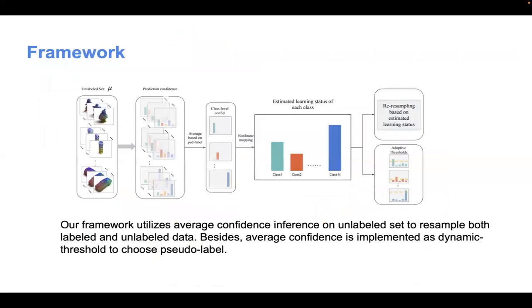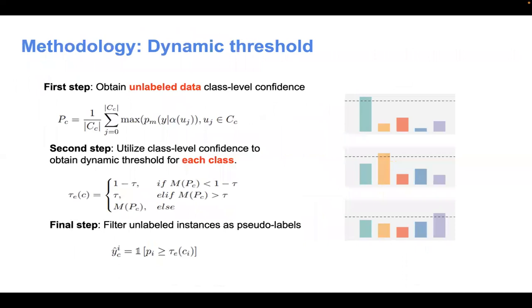This is the framework for our method. Our framework utilizes average confidence on unlabeled data to resample both labeled and unlabeled data. Besides, average confidence is implemented as a dynamic threshold to choose the pseudo-labels.